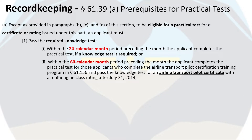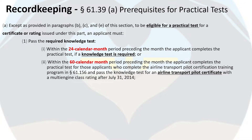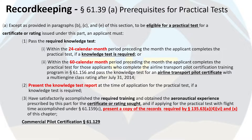FAR 61.39 lists the prerequisites to be eligible to take the practical test, also known as your checkride. You must have passed the knowledge test, also known as the written test, within the preceding 24 calendar months. You must take your written test results to your checkride and let the DPE review your test results.